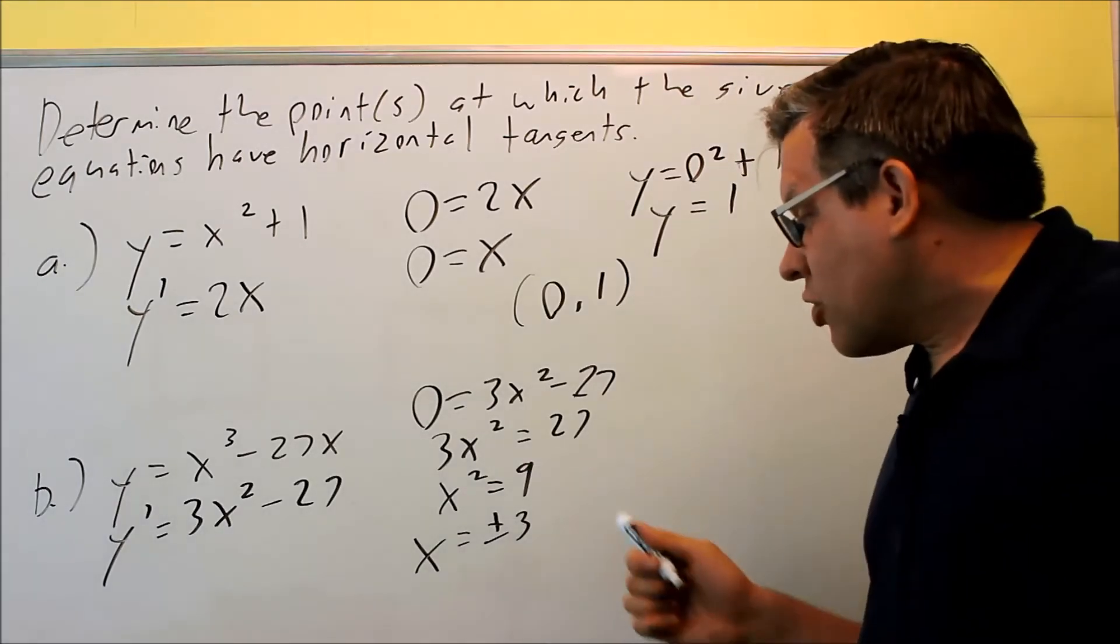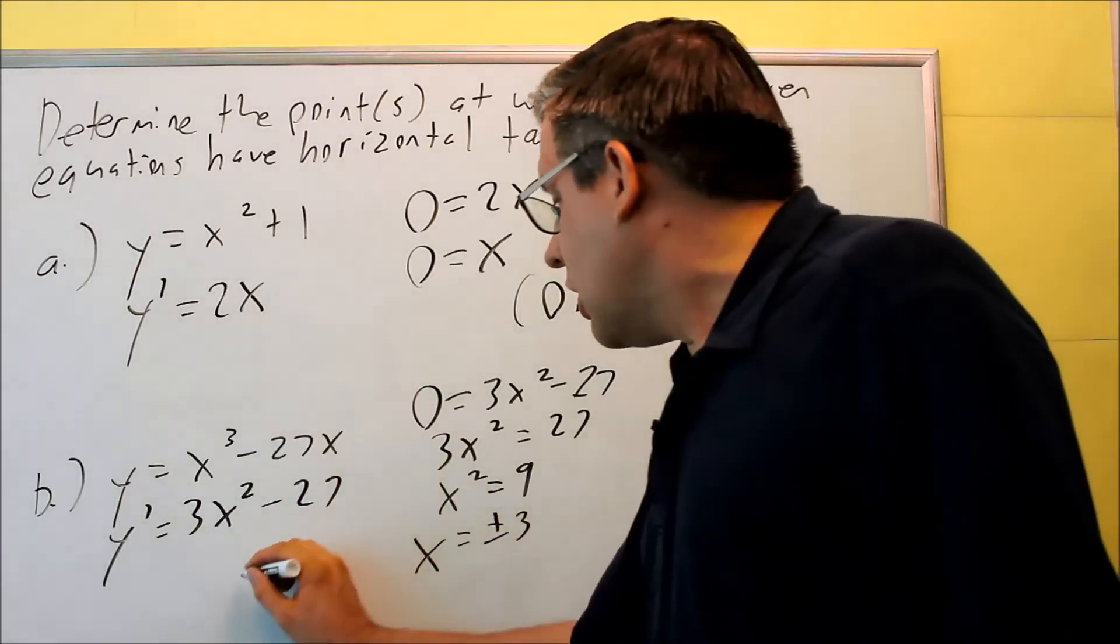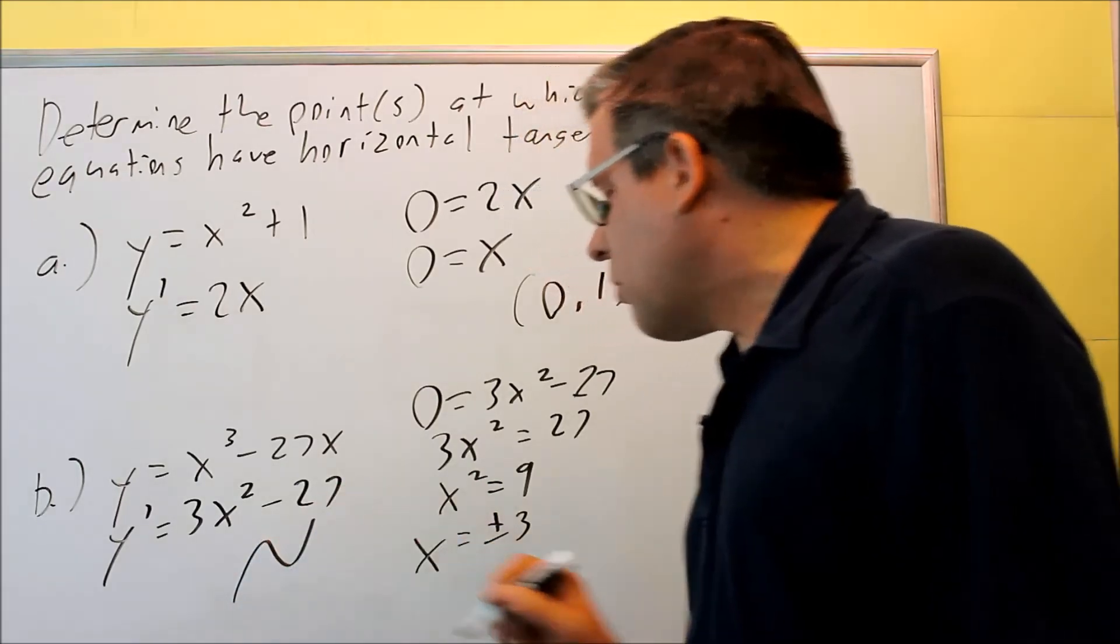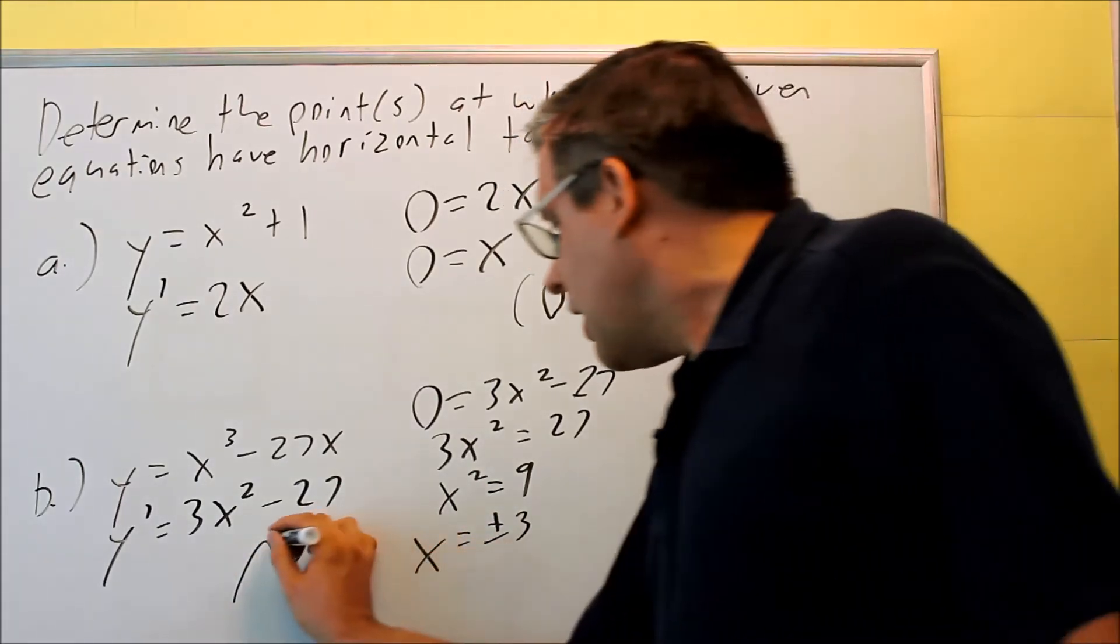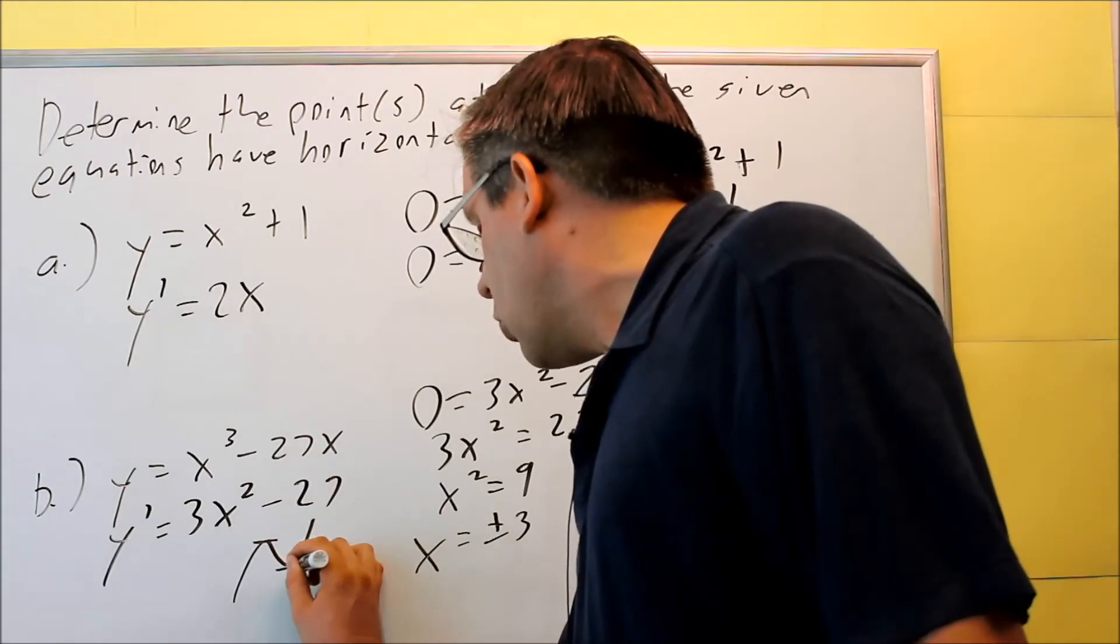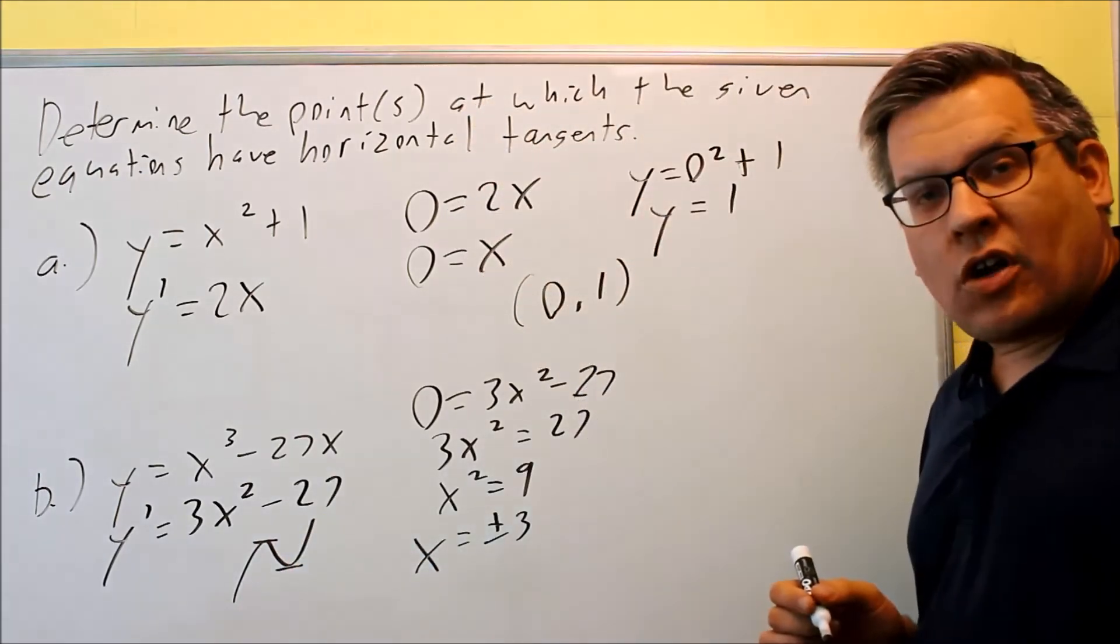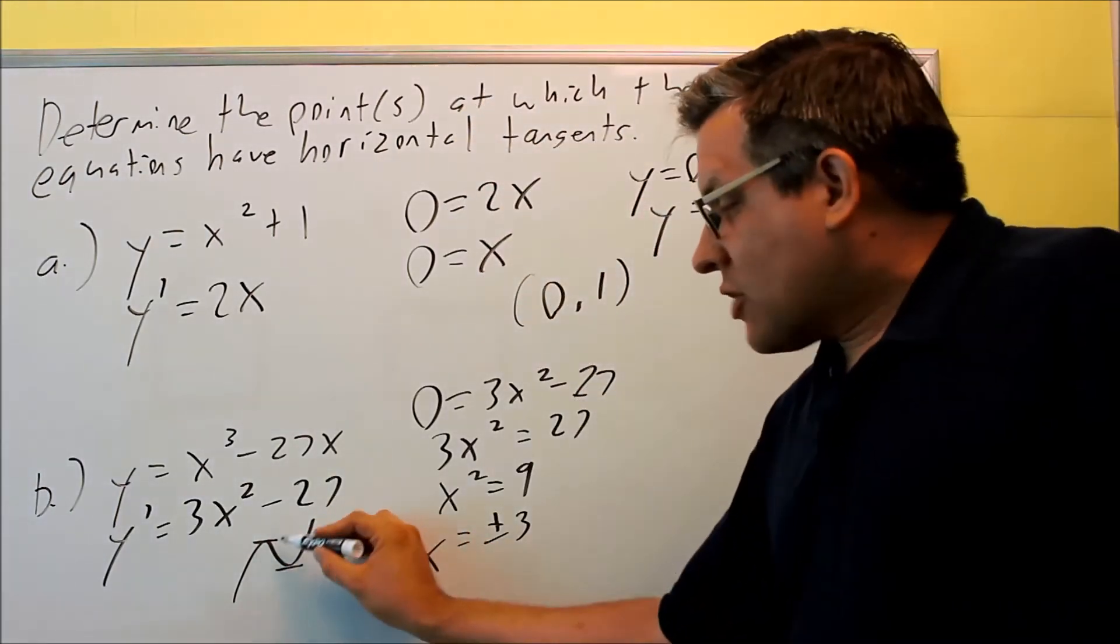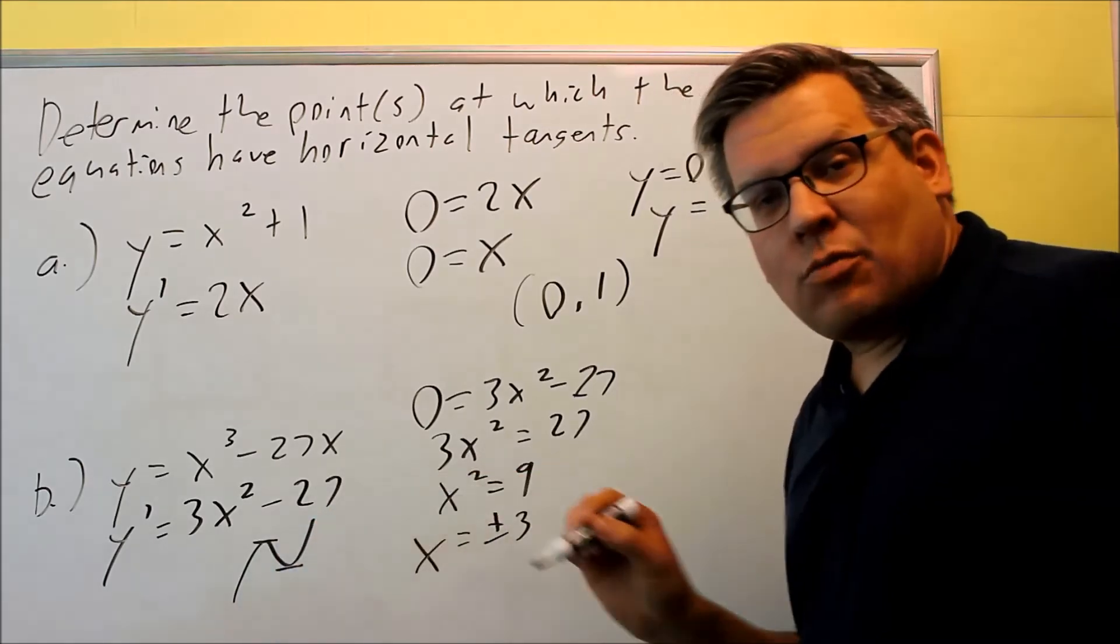So it is possible you could have two places where this occurs. Now this is a cube, which means that the graph may look something like this, and so there's two places here where you have a horizontal tangent. That's pretty much going to be at the relative max and min.